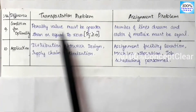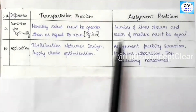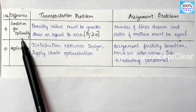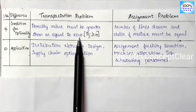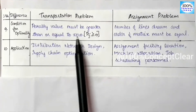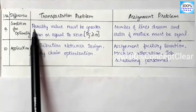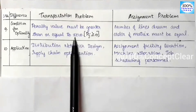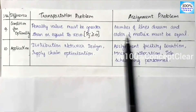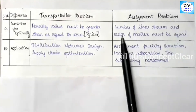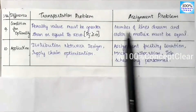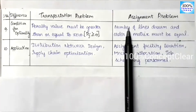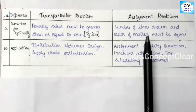The 9th point is the condition for optimality. In the transportation problem, the penalty value must be greater than or equal to zero to reach optimality. In the assignment problem, the number of lines drawn and the order of the matrix must be equal — we draw lines covering all zeros, and when the number of lines equals the matrix order, we have reached optimality.